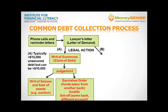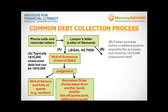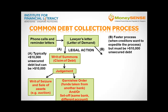After all avenues for recovering debts have been explored and proven unsuccessful, and there is at least $10,000 of unsecured debt, the creditor may commence bankruptcy proceedings against the debtor. To proceed, a statutory demand must first be served on the debtor.